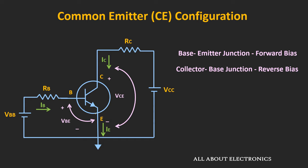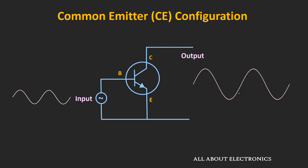Here, the base current Ib is the input current, while the collector current Ic is the output current. Similarly, the voltage Vbe is the voltage on the input side, while the voltage Vce is the voltage on the output side. Considering these DC biasing voltages are already applied, if we apply a sine wave between the base and the emitter terminal, then we will get the amplified output between the collector and the emitter terminal.